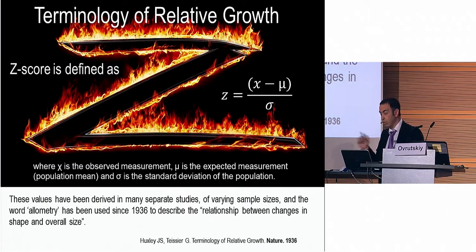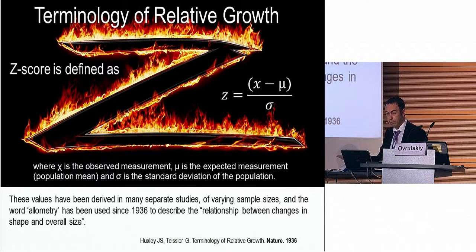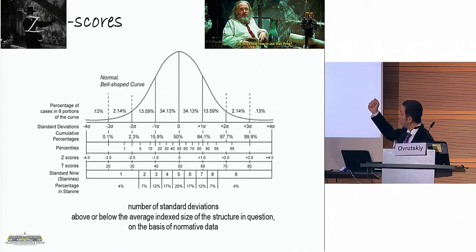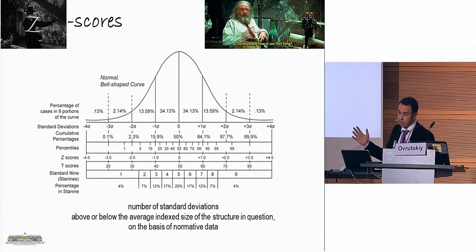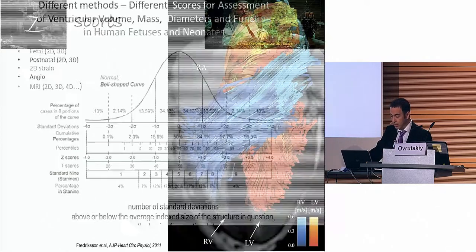This is the Z-score. Before we speak about the Z-score, I should say that the word 'allometry' has been used since 1936, published by Huxley to describe the relationship between change in shape and overall size. The Z-score defines the deviation: the observed measurement minus the expected measurement, divided through the standard deviation. This is the well-known Gaussian distribution with 50% in the middle, with zero standard deviation and a Z-score of zero. Normal values are between plus one and minus one, or probably plus two and minus two. But we are looking for the extremes — very small or very large.